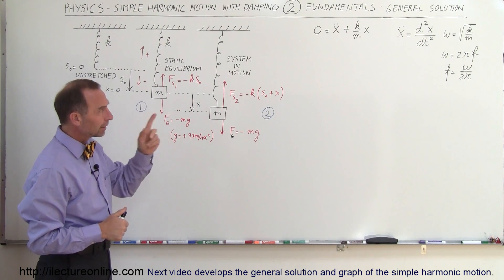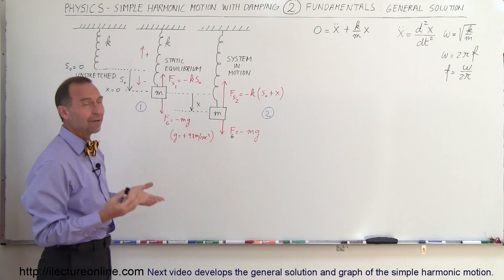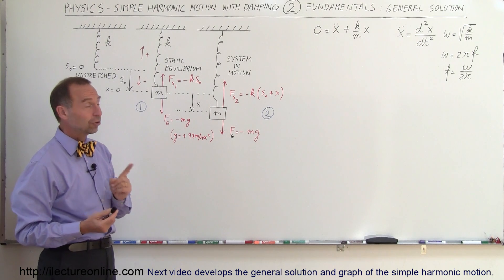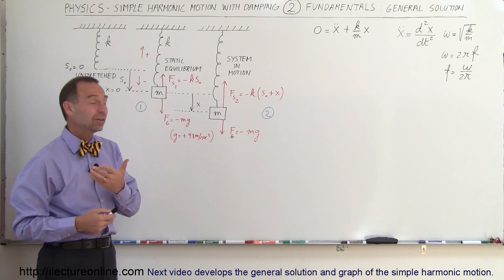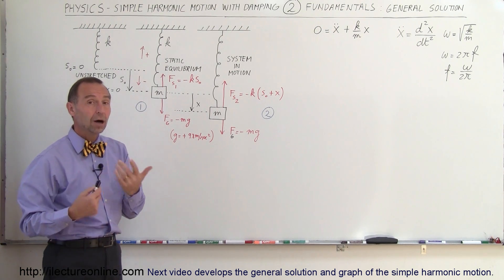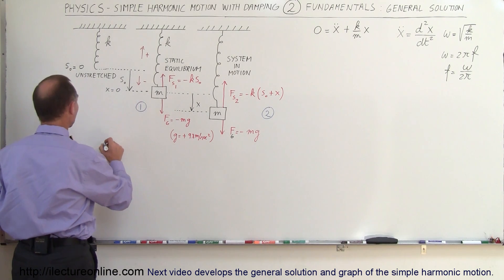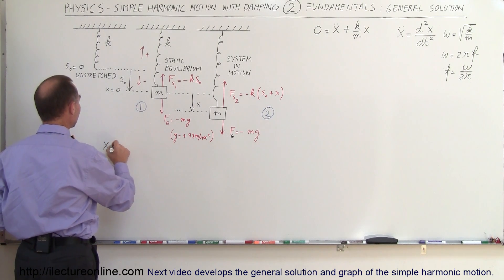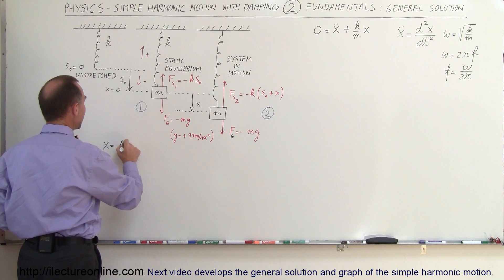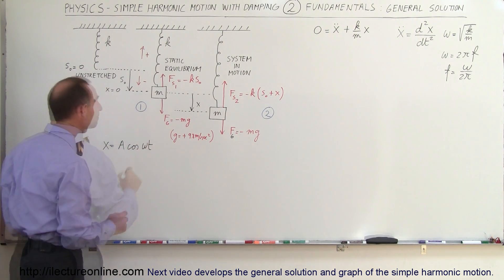Now when we look at that equation, you may not right away see the obvious solution, but it turns out the obvious solution is equal to the sine or the cosine of omega t. In other words, if we take something like this — if we say that x is equal to a times the cosine of omega t.